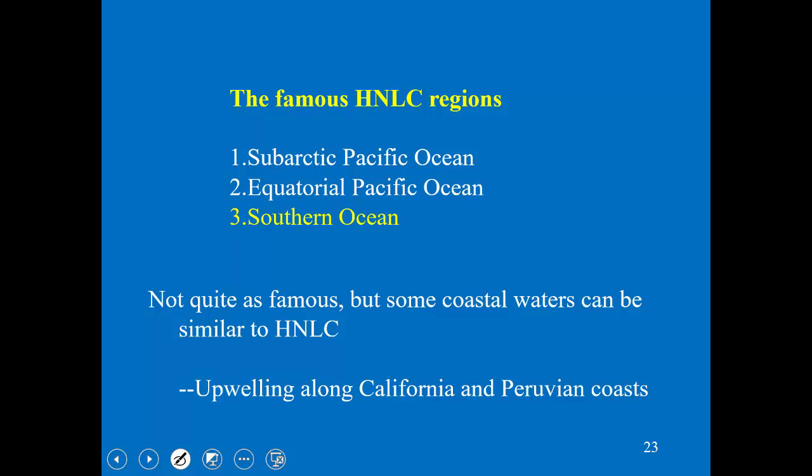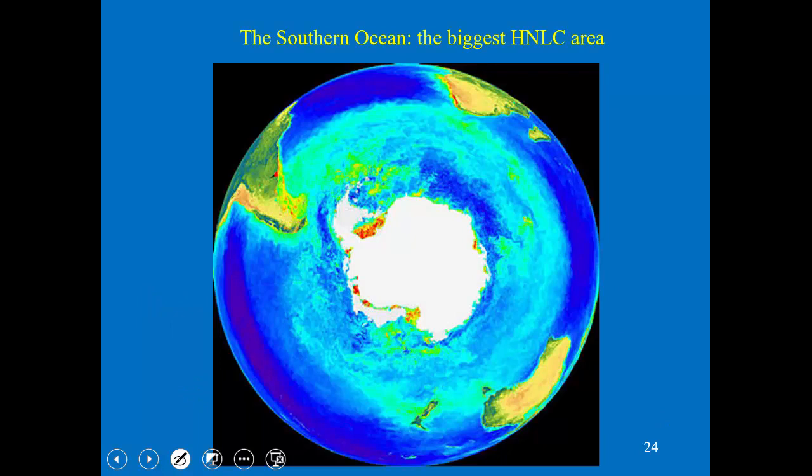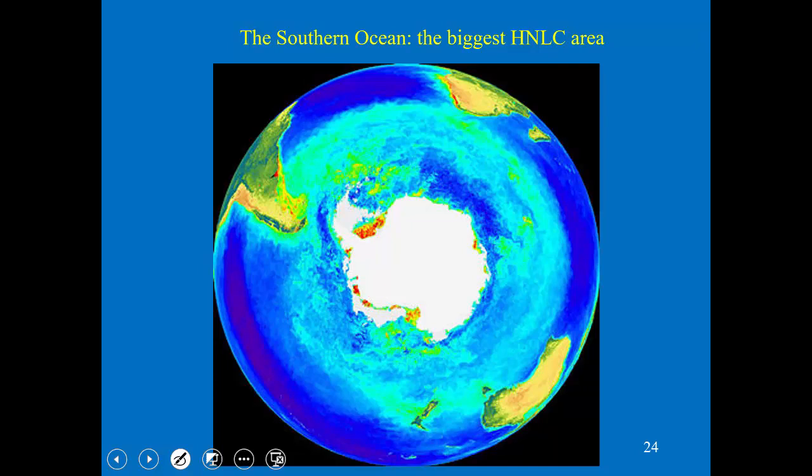You can also get HNLC-like conditions in upwellings after a bloom has occurred along the coast of California and Peru. I went on a cruise from San Diego down to Chile that went through some of these upwellings. The whole point was to look at HNLC-like conditions seen after the bloom has crashed. But the big three HNLC regions are the subarctic Pacific, the equatorial Pacific, and the Southern Ocean. The Southern Ocean is the big daddy — the biggest one by far.